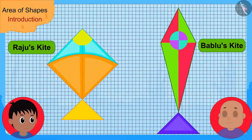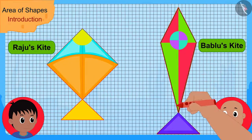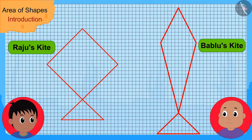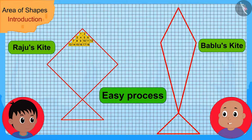Then he drew outlines of the kites on a grid paper. Raju immediately began to count the number of squares inside the outlines of the kites. Bablu said, 'Hey Raju, wait. I have an easy process to find the area of shapes. I will show you.'